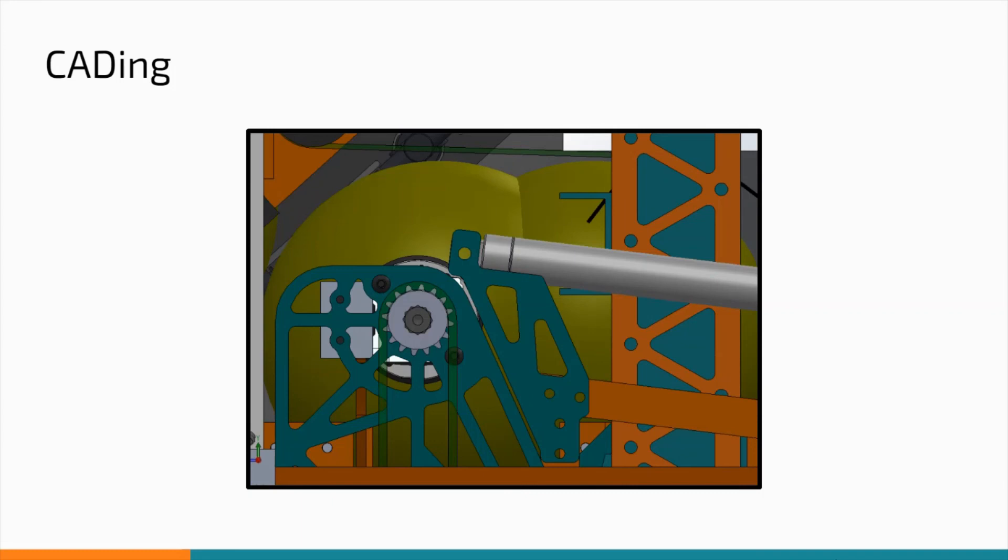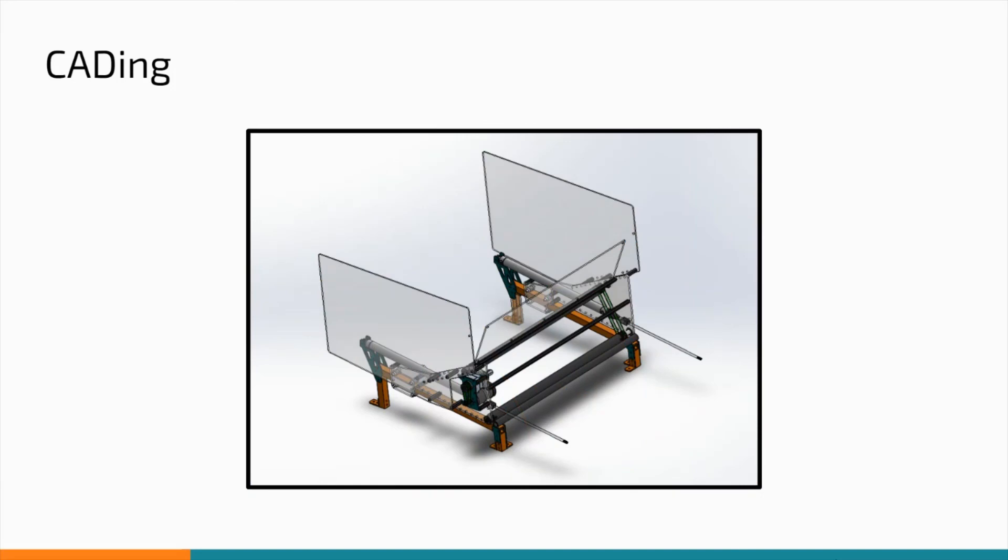After this, the CADer designs how the intake will actuate and mount onto the robot. After all these major details are determined, the design will then be refined to become a functional intake.